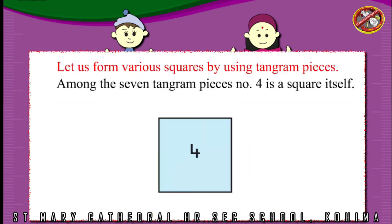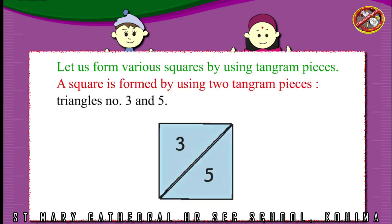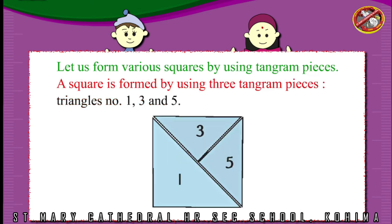Let us form various squares by using tangram pieces. Among the seven tangram pieces, number four is a square itself. A square is formed by using two tangram pieces, triangles number three and five. A square is formed by using three tangram pieces, triangles number one, three, and five.